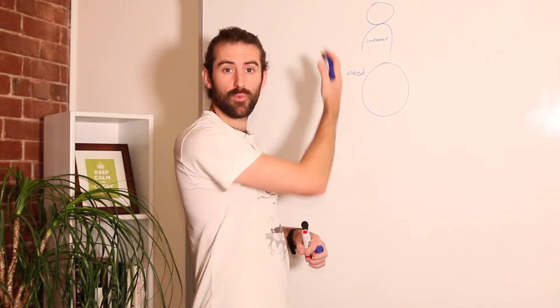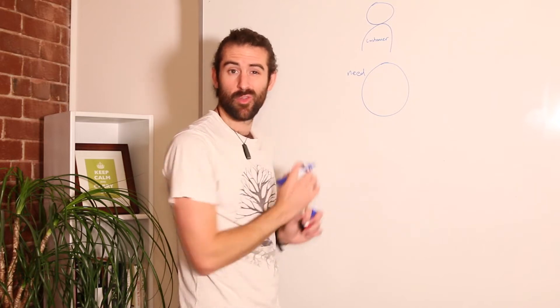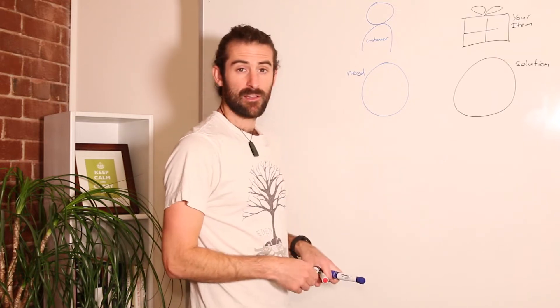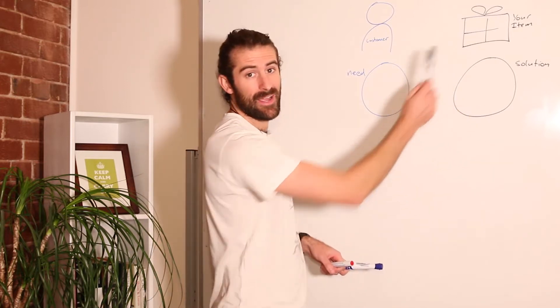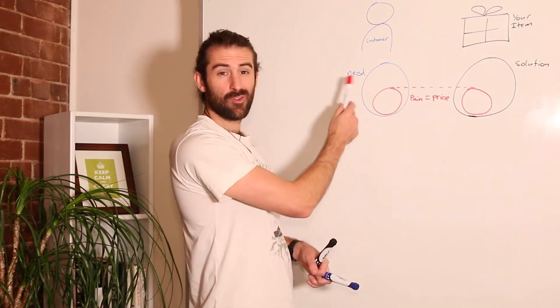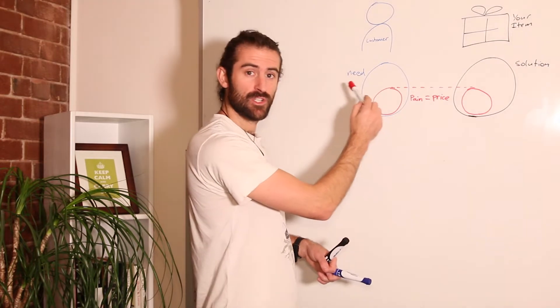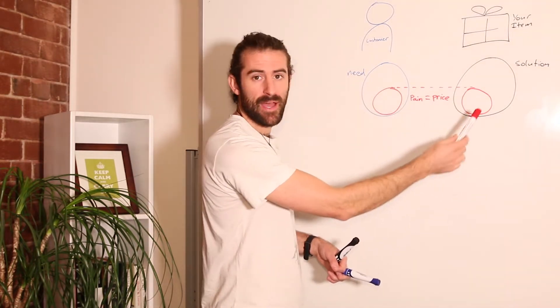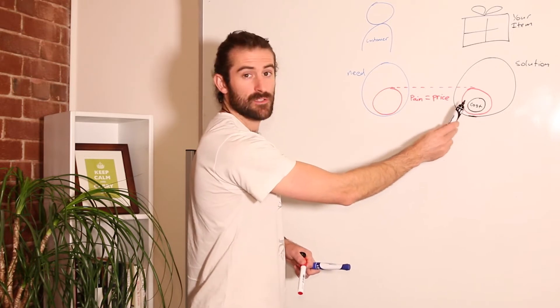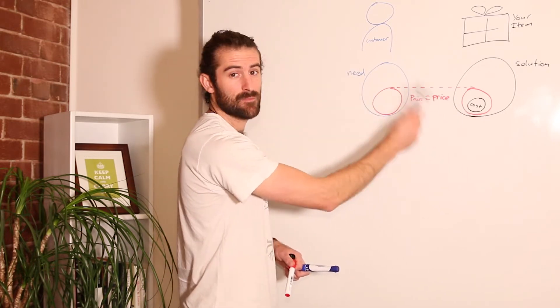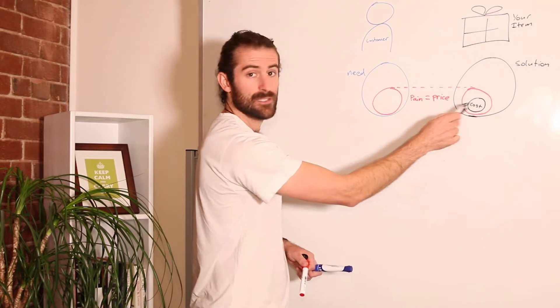The kicker is that we only ever start out with our half of that equation. So, here's another way of thinking about this. Out in the world is a real person with a real need. Let's call them a customer. They are looking for a solution to that need, and you want it to be your item. The customer's need causes them a certain amount of pain, which sets the price that they are willing to pay for a solution. If this price is larger than the cost of making the solution, and this customer buys it, then you make some money.